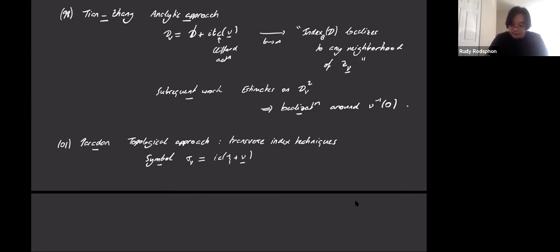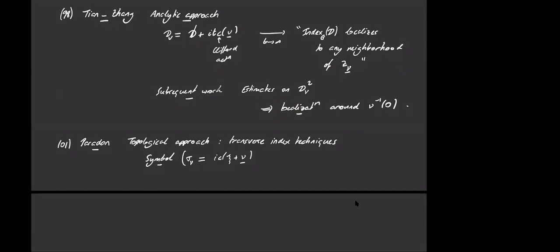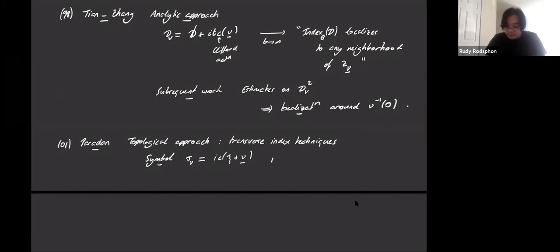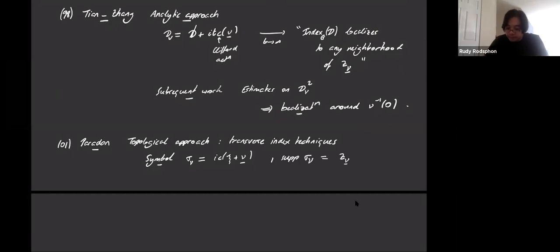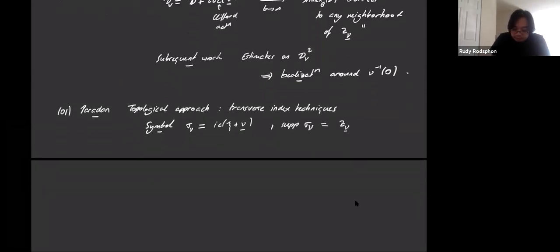This operator is transversely elliptic. It turns out that if you look at the support of this symbol in terms of a transversely elliptic symbol, the support is simply the zeros of the vector field. So from there you have a K-theory element in the transversely elliptic cotangent bundle — something introduced by Atiyah. You just put the metric and you get all the covectors that are orthogonal to the orbits.